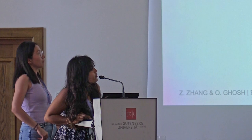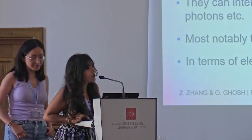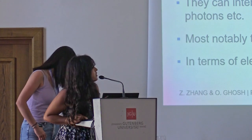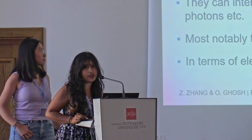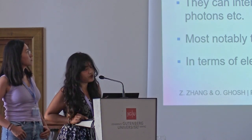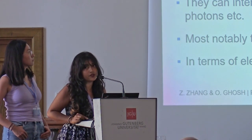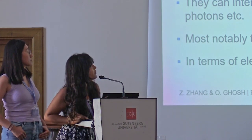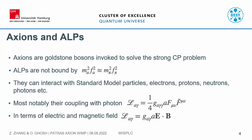What is this experiment based on? Most of you are familiar with what axions are. They are light bosons, pseudoscalar bosons, that arise in Peccei-Quinn symmetry breaking invoked in order to solve the strong CP problem. And axion-like particles, unlike axions themselves, are not bound by the tight phenomenological relation. They can interact with some standard model particles, including photons.